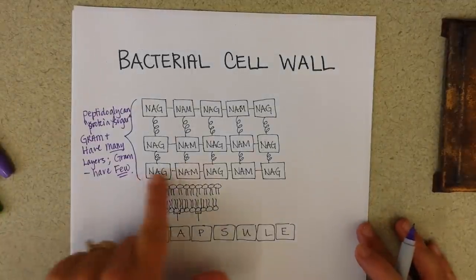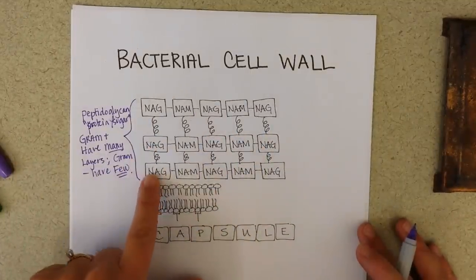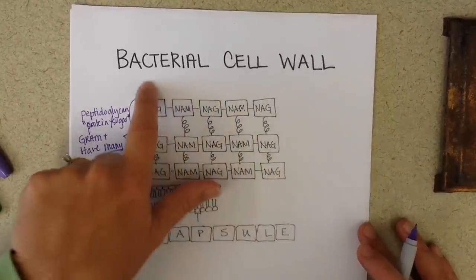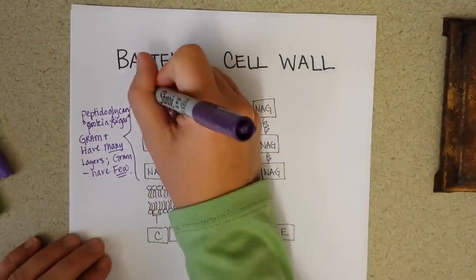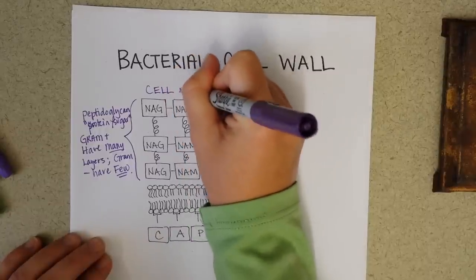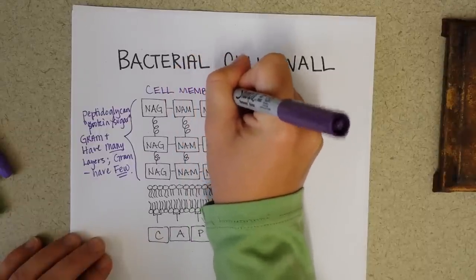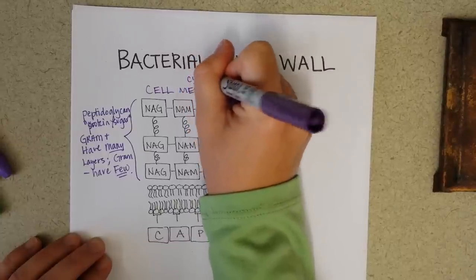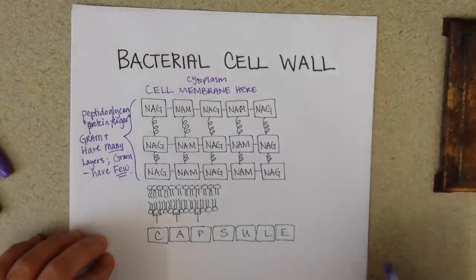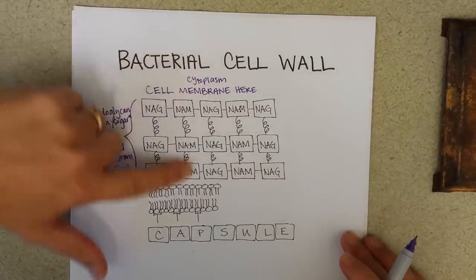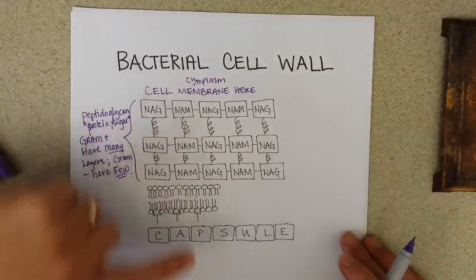So when you think about this right here being part of the cell wall, then imagine that in here is the cell membrane. So the cell membrane here, which means the cytoplasm would be here, and then all the other structures of the cell. So we're working our way from the inside of the cell to the outside of the cell.